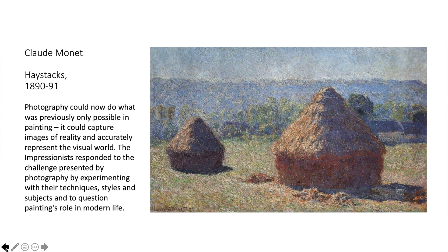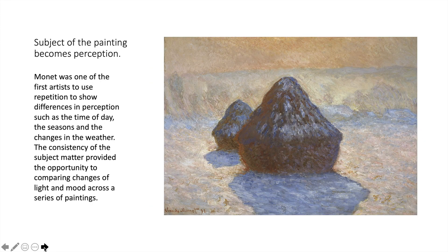That is probably the most important point I'm going to make in this presentation: they were using painting to ask, what is the role of painting? It's a little bit meta, from the very beginning of modernism. Now, because photography can represent the world — photography can show you a picture of what the world looks like — the subject of the painting now becomes perception: human perception.